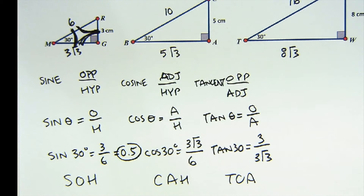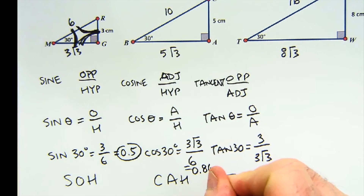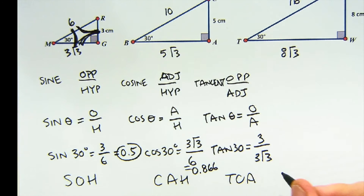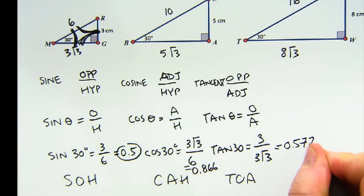Let me grab my calculator and take 3 root 3 divided by 6, and I get a value of about 0.866. And if I take 3 and divide it by 3 root 3, I get a value of about 0.577. Those are the cosine and tangent of 30 degrees respectively.